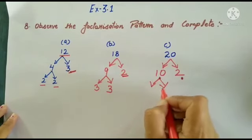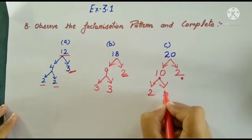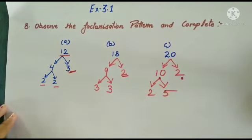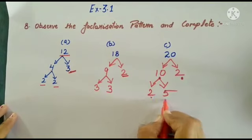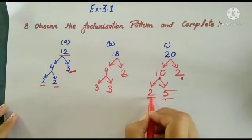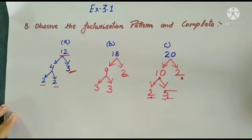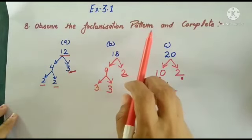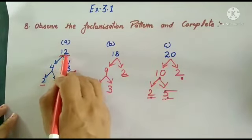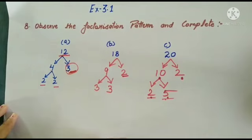2 will be done, double 2 will be done, 10. So look — the division ahead will not happen, because one is already going by its own table. Look, 2 comes in the table of 2, 5 comes in the table of 5. No further division will happen. In this way you have done the question — observe the factorization pattern and complete. You have to look at these numbers and take the last number which cannot be divided further; no further division will happen.